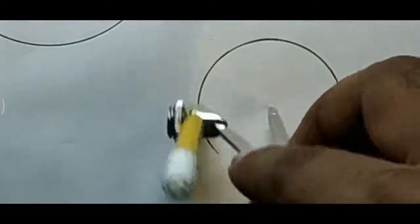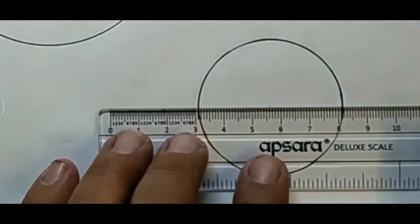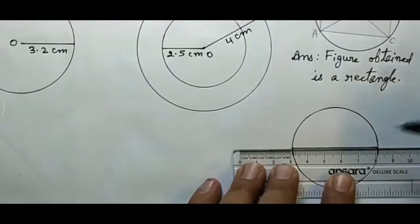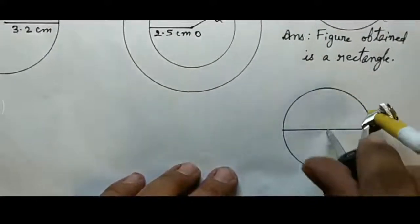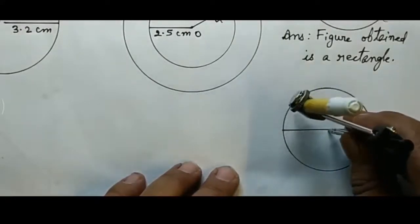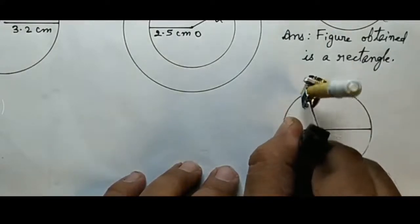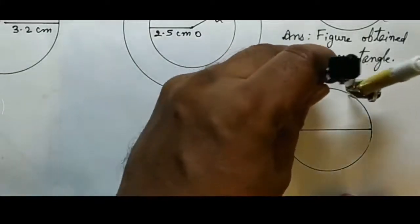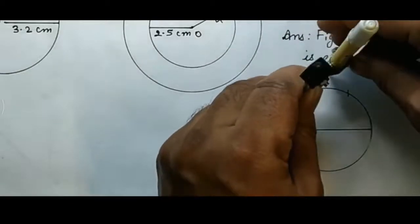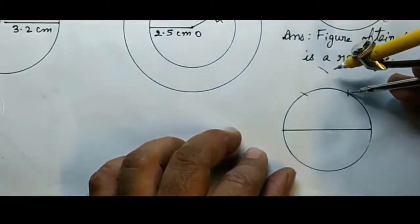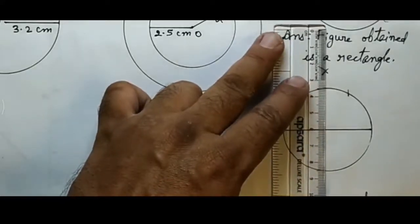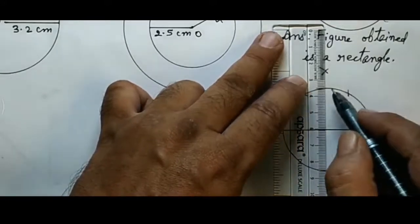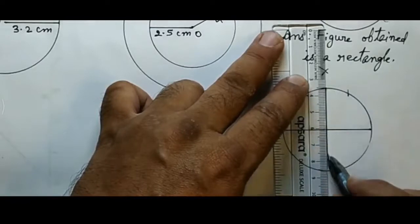Now for the 2nd part, draw a circle of any radius again and draw the 1st diameter. Then the 2nd diameter will be perpendicular to the 1st diameter. For drawing this, mark one arc, then a 2nd arc, then other arcs. Join the center of the circle to the intersecting point of the arcs. This diameter will be perpendicular to the other diameter.